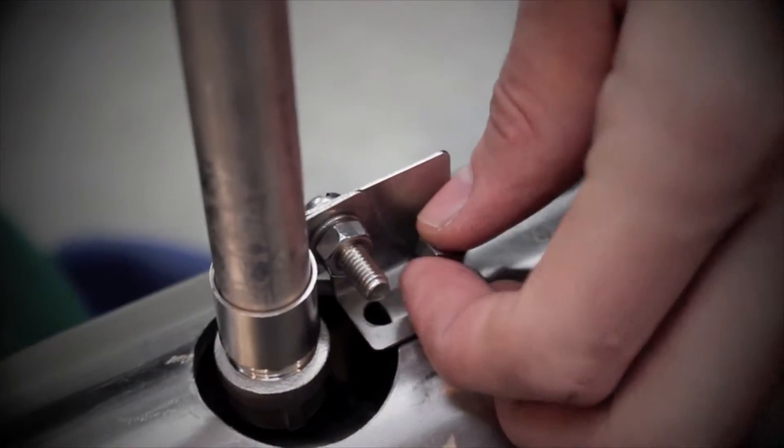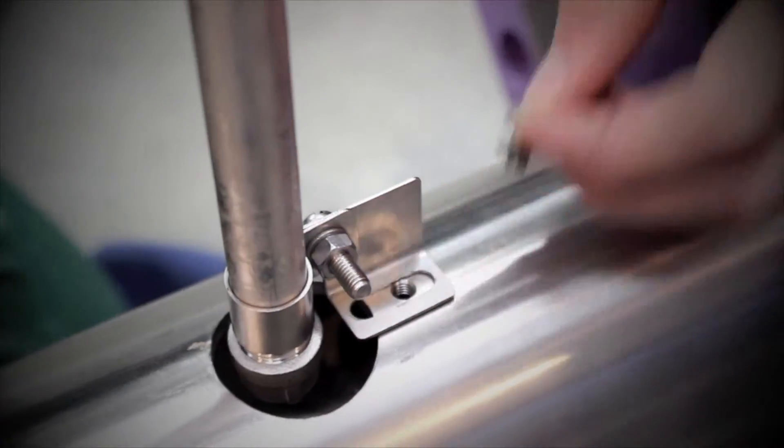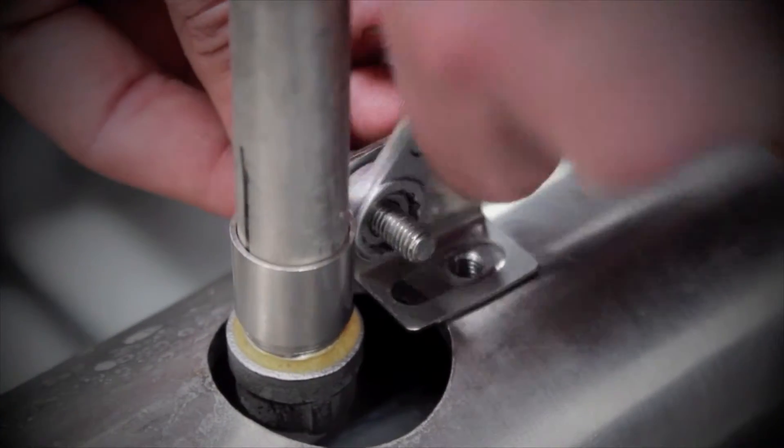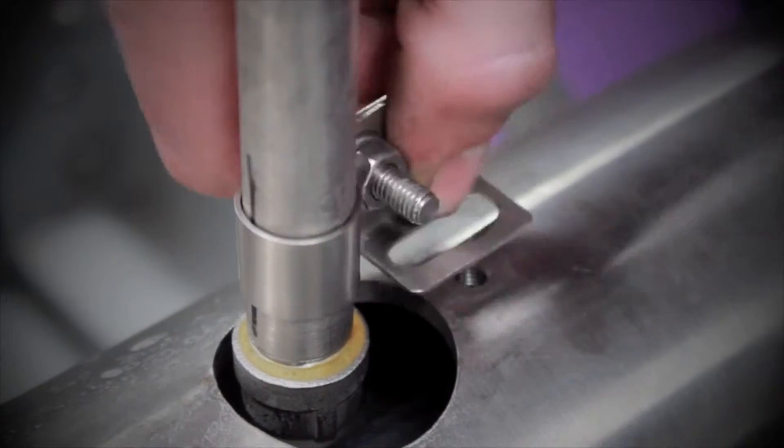Remove the screw along with the washer and place both items to one side. Slide the bracket up away from the column.